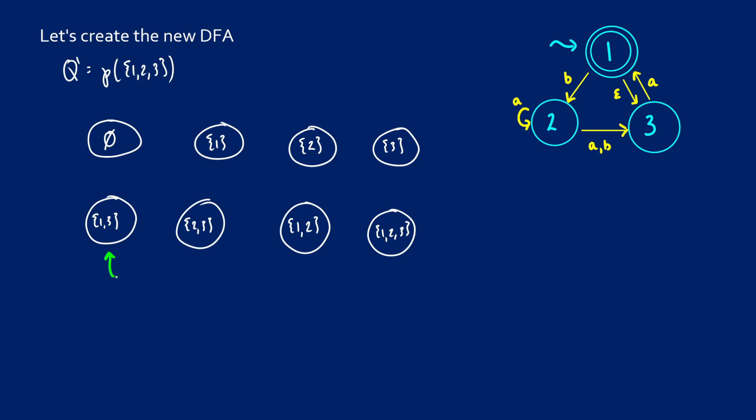We should also consider our accept states. So our accept state will be anything that has a 1 in it. So an accept state could be this set containing 1, it could be this set containing 1, this set containing 1, or this set containing 1. So we have our nodes, our alphabet's going to be the same, we have our start node, our accept states. Now we need to do transition functions. And this is where things get a little bit complicated.